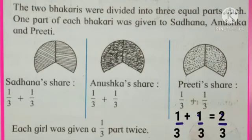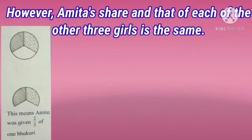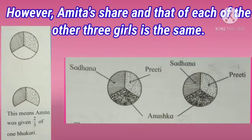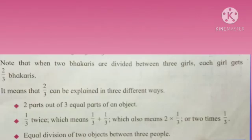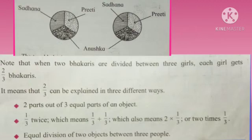Each got one upon three plus one upon three, which is two upon three. Amita's share and that of each of the other three girls is the same — two upon three. Anushka, Sadhana, Priti and Amita all got the same share: two upon three. Note that when two Bhakris are divided between three girls, each girl gets two upon three Bhakris. These two Bhakris divided among three girls means all three girls get the same — two upon three.